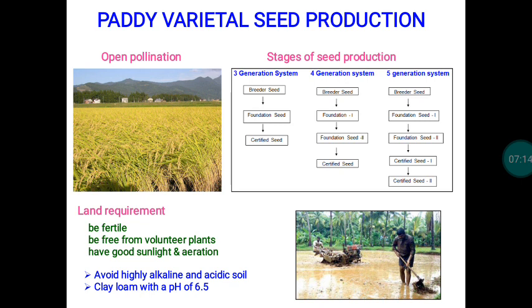Based on two criteria — self-pollination occurring in the crop and heavy demand for seed — we can follow a seed multiplication system. In the case of paddy, we follow a four-generation system of seed multiplication: breeder seed, foundation one, foundation two, and certified seed. Certified seeds are then distributed for grain production purposes.